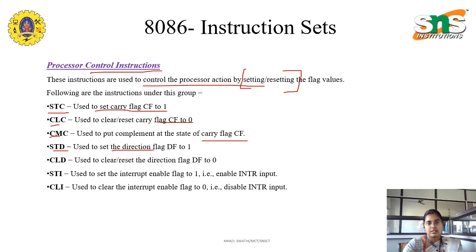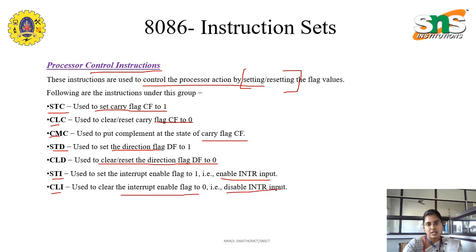STD is used to set the direction flag. CLD means to clear or reset the direction flag to 0. STI means used to set the interrupt enable flag to 1, that is enable external data input. CLI is used to clear the interrupt enable flag to 0, so disabling the external data input.